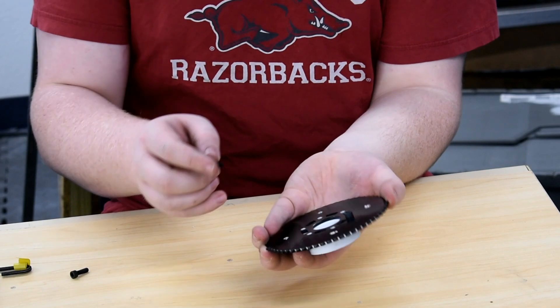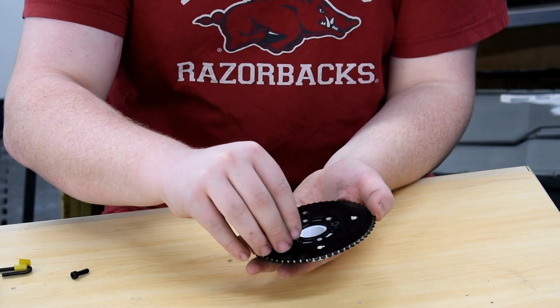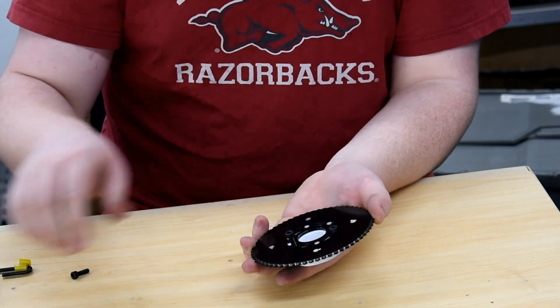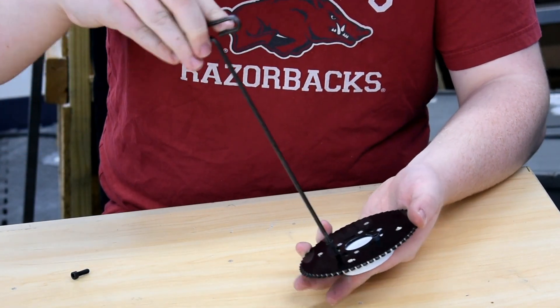Attach the 3D printed slip ring holder to the 60 tooth sprocket using 1-1/2 inch 10-24 screws. Holes in the sprocket may need to be drilled out. CAD files for this are available on our webpage.